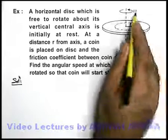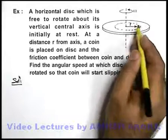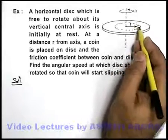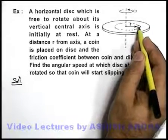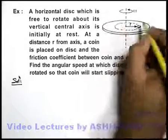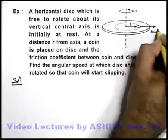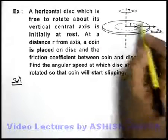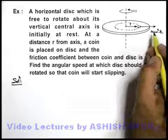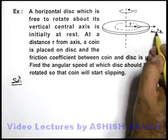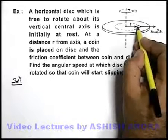Initially when omega is zero, the coin will be at rest because of friction. If it is rotating at omega, the coin will experience a centrifugal force m omega square r in the revolving reference frame, and this centrifugal force will have a tendency to pull the coin outside.